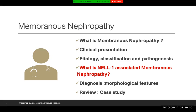Membranous nephropathy is usually seen in adults and is a common, well-known cause particularly in Caucasian males of nephrotic syndrome, in the age group of 30 to 60. We will understand the etiology, pathogenesis, and classification — primary and secondary causes. There is also a new hot topic called NELL-1-associated membranous nephropathy, which we will cover along with the diagnostic and morphological features.